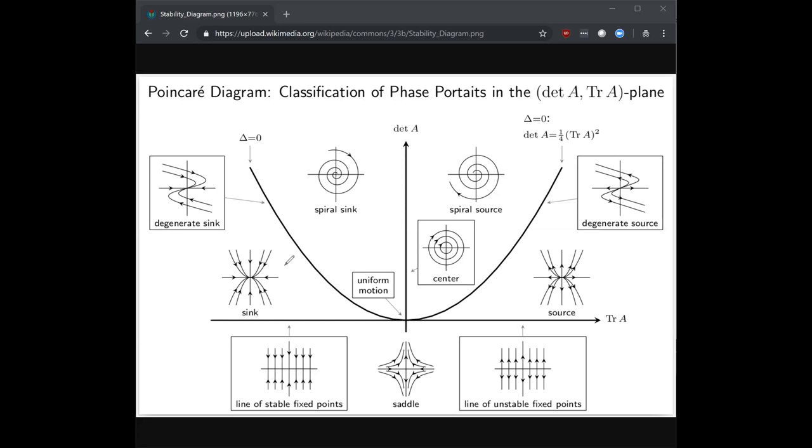Similarly, if you are on this side of the discriminant line, where the trace is negative and the determinant is positive, then you will end up with a sink where you will just exponentially fall into the fixed point if you are not on it.